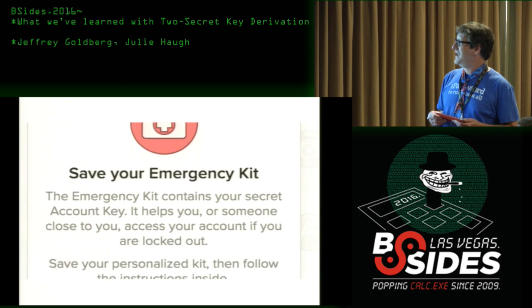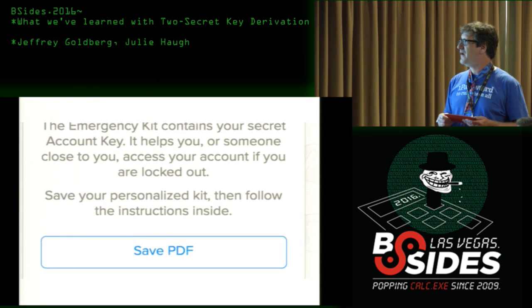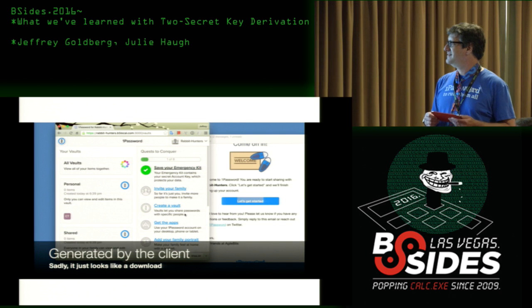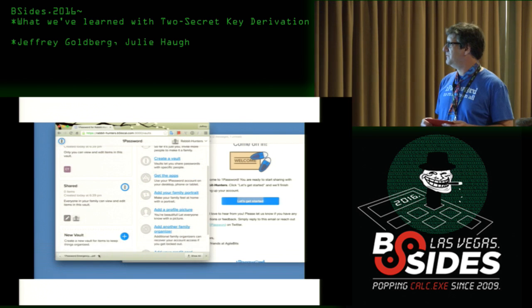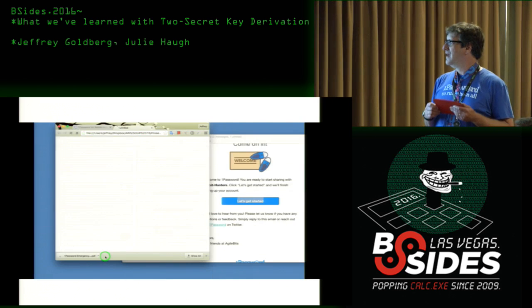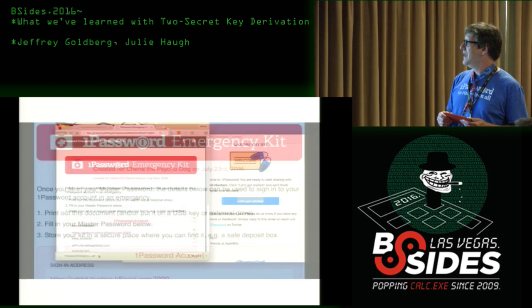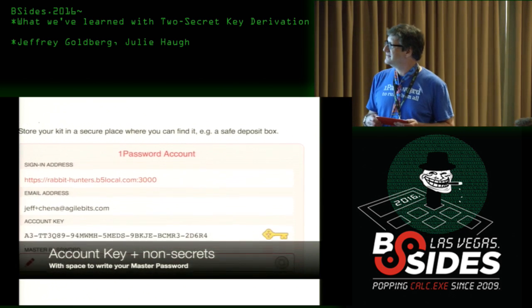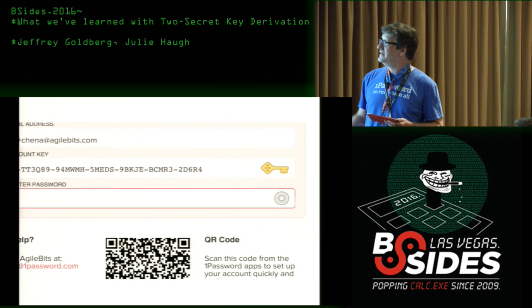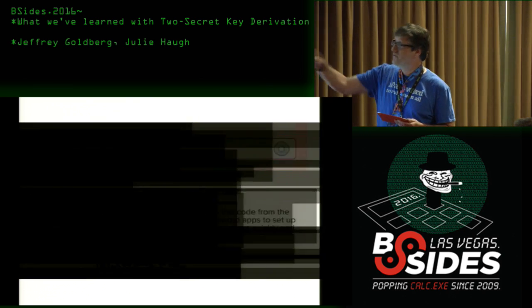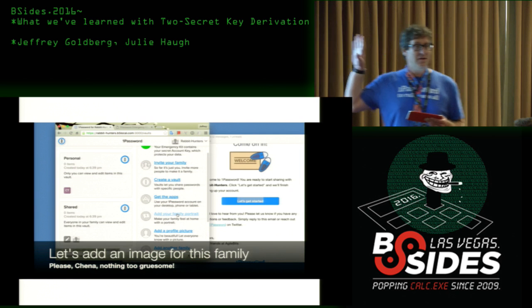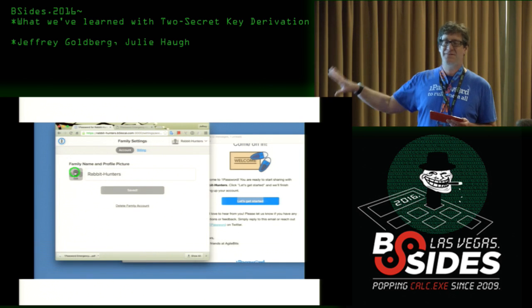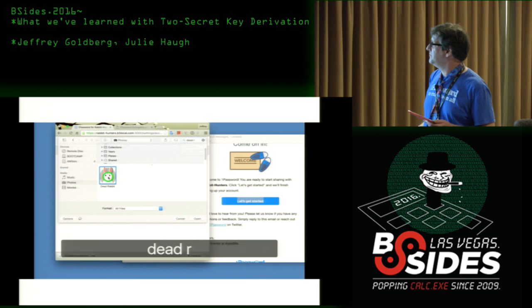Her first task is to save her emergency kit. The emergency kit contains all the non-secret information, her account key, and a nice space to actually write in your master password, plus a QR code that we'll get to later. You're encouraged to write down your master password and put this piece of paper somewhere safe.